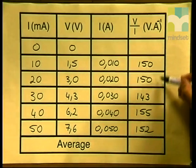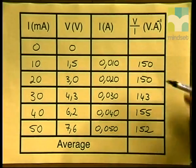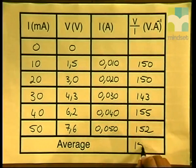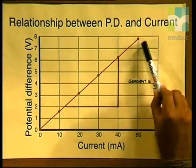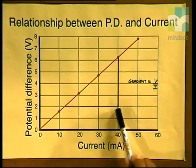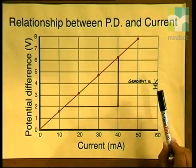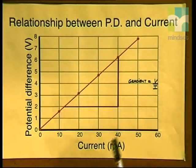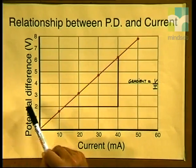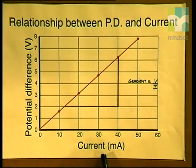We calculate an average value of the ratio of V over I by adding up all the ratio values and dividing by 5, giving an average value of 150 volts per ampere. Referring back to our graph of potential difference against current, we have a straight line with a constant gradient, where the gradient equals the ratio of V divided by I. Both the table calculations and the graph confirm that potential difference is directly proportional to the current passing through the resistor.